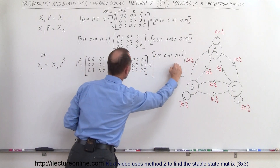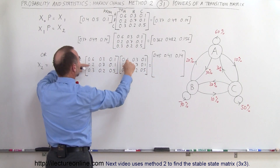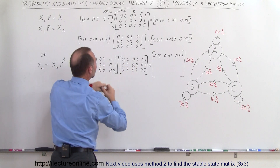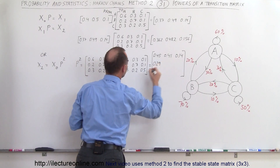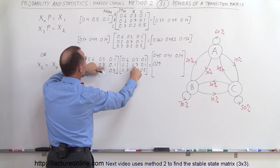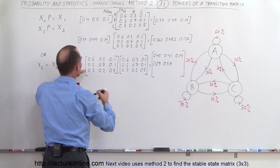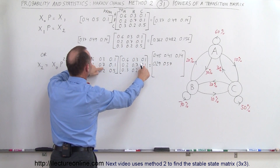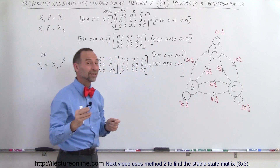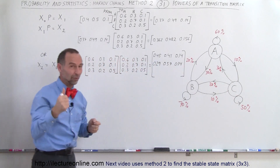For the three elements of the second row, we take the second row and multiply it times each column. That gives 0.29 for the first element, 0.57 for the second element, and 0.14 for the third. A quick check: 0.29 + 0.57 + 0.14 equals 1.00. So far, so good.